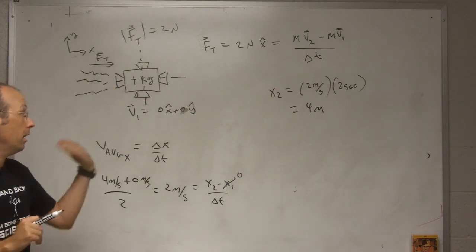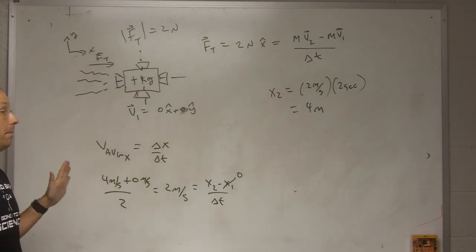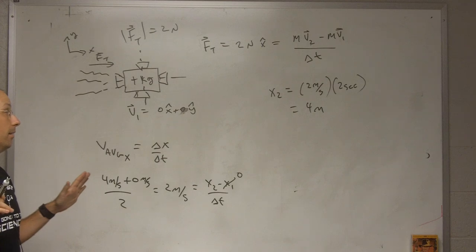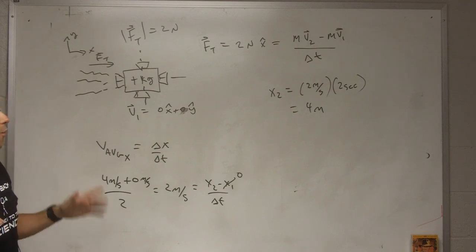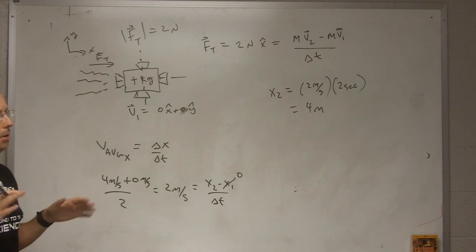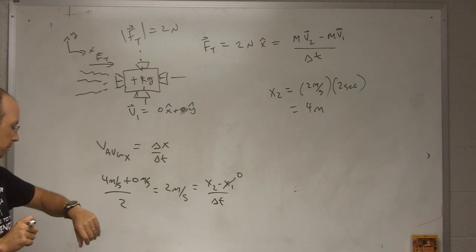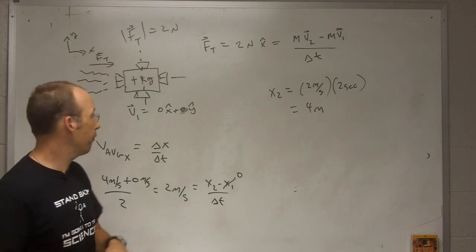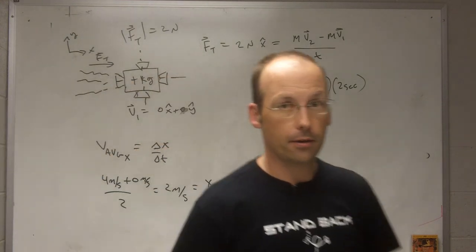So it started at x equals 0 and it ends up at 4 meters. Maybe this is a bad idea because it ends up at 4 meters and its final velocity is 4 meters per second. But those aren't necessarily related. Oh, I got a phone call. Okay, so let me stop there.